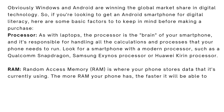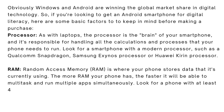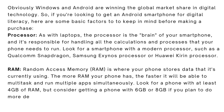Look for smartphones with a modern processor like Qualcomm Snapdragon, Samsung Exynos, or Huawei Kirin. For RAM — Random Access Memory, where your phone stores data it's currently using — the more RAM, the faster it will multitask and run multiple apps simultaneously. Look for a smartphone with at least 4 GB of RAM, though 6 GB or 8 GB is better for more demanding tasks.